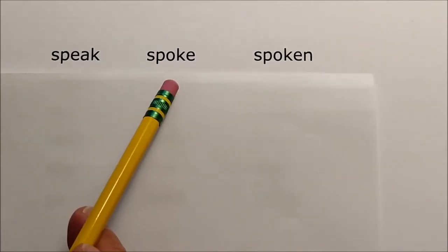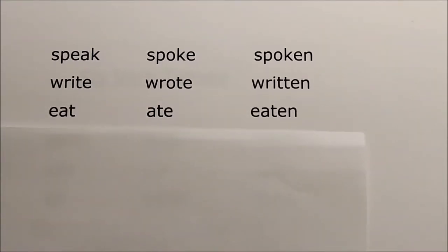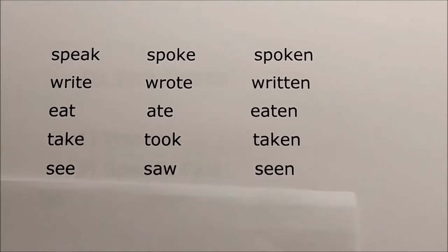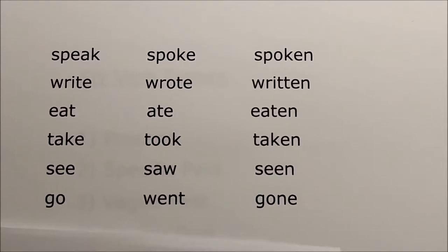However, some verbs in English are irregular — their Forms Two and Three are quite different. For example, 'speak' becomes 'spoke' in Form Two and 'spoken' in Form Three. 'Write' becomes 'wrote' and 'written,' 'eat' becomes 'ate' and 'eaten,' and so on. These are all irregular verbs, but they're used very commonly, so as native speakers you automatically learn them as a child and they become part of your vocabulary.